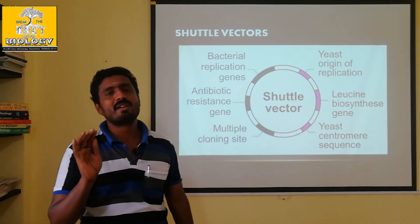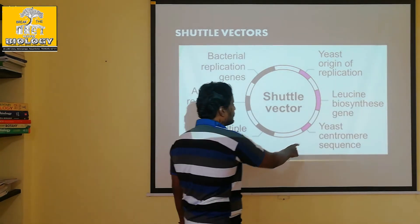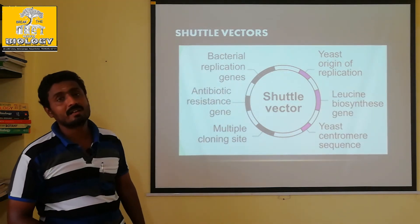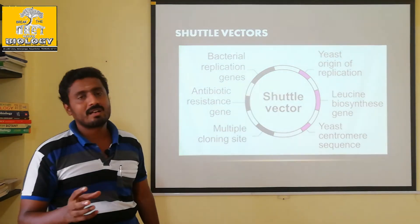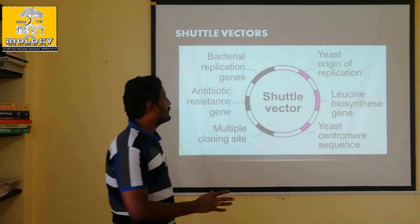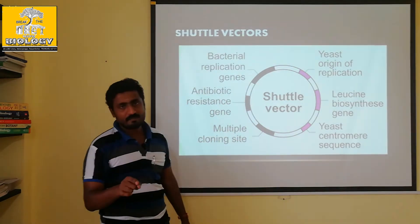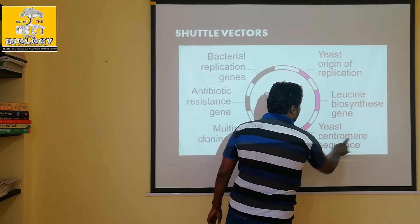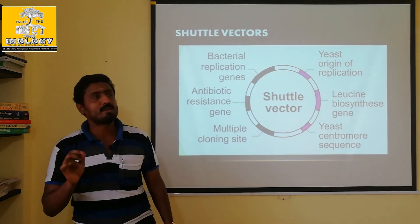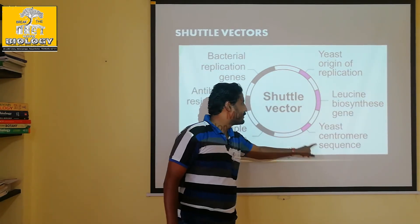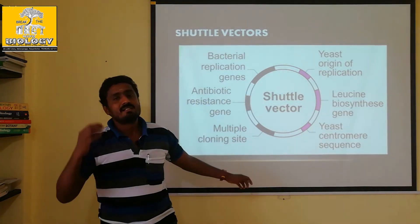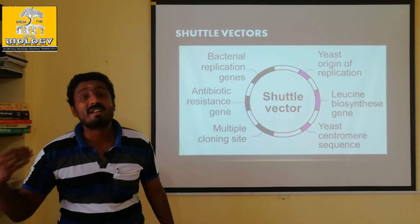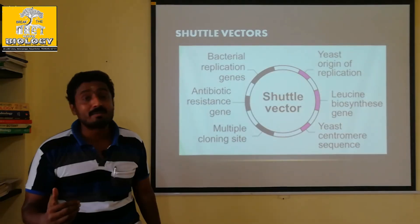We have a yeast centromere sequence. Bacteria have a circular chromosome, which is why multiplication is easy. But if this shuttle vector is used in a eukaryote like yeast, and the centromere sequence is included, then the shuttle vectors can replicate and pass to the next generation in yeast cells.